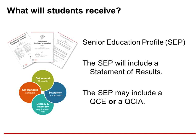At the end of Year 12, all students will be issued with a Senior Education Profile (SEP). The SEP will include a Statement of Results, which is a transcript of a student's learning account including everything they have studied during senior schooling. The SEP may also include a Queensland Certificate of Education for students who have met the requirements, or a Queensland Certificate of Individual Achievement (QCIA) which remains the appropriate option for some students on individualised learning plans. Students who do not meet QCE requirements by the end of Year 12 can continue to accrue credit after school and will be issued a QCE on 1 June or December after they have met the requirements. Learning accounts remain open for 9 years, although students can apply to the QCAA to reopen accounts after this time.